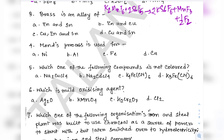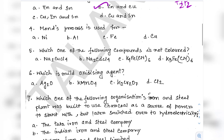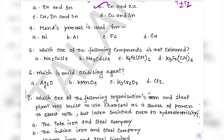Question 3: Brass is an alloy of — this is a very common question. It is an alloy of zinc and copper, so option B is the correct answer. Question 4: Mond's process is used for purification of a metal, also mentioned in the NCERT chapter on metallurgy. Nickel — pure nickel is formed by Mond's process; Ni is the answer.